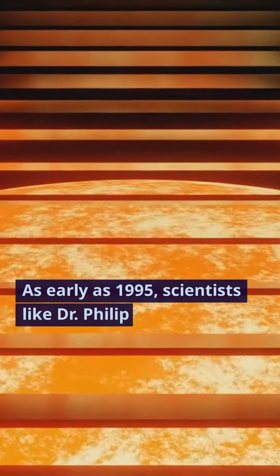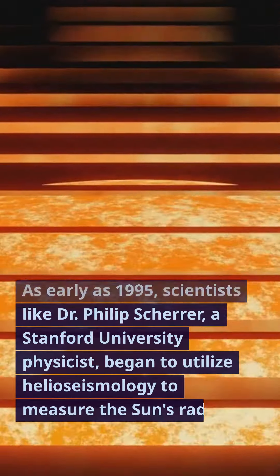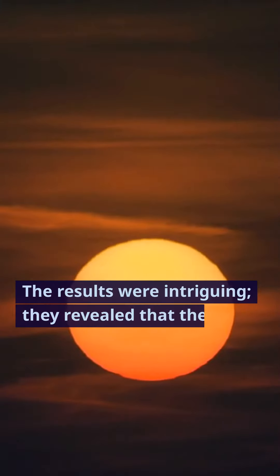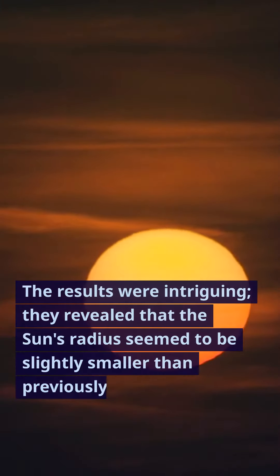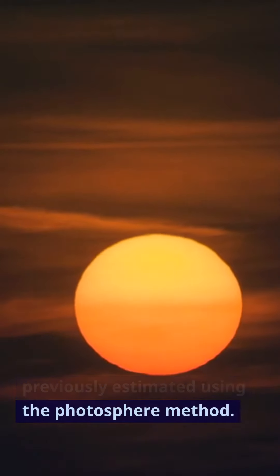As early as 1995, scientists like Dr. Philip Scherer, a Stanford University physicist, began to utilize helioseismology to measure the Sun's radius. The results were intriguing. They revealed that the Sun's radius seemed to be slightly smaller than previously estimated using the photosphere method.